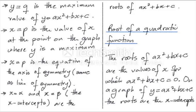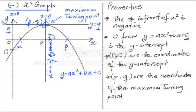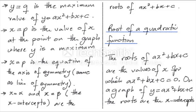X equals alpha and x equals beta are the x-intercepts, which are the roots of the function. So the roots of the function are x = alpha and x = beta. If you draw a graph of a function, the roots would be the x-intercepts.